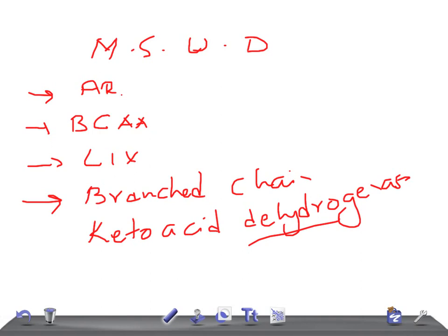So remember, what's the pathophysiology? Defect in the decarboxylation of three important amino acids: leucine, isoleucine, and valine by which enzyme? Branched chain ketoacid dehydrogenase. What are the signs and symptoms? Clinical features?